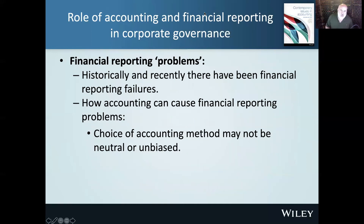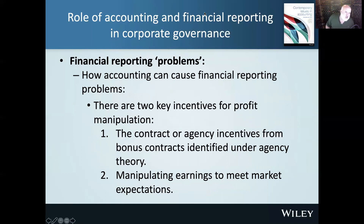Historically and recently there have been financial reporting failures. Choice of accounting methods may not be neutral or unbiased. There can be incentives for management to manipulate profit — they might want to ensure they reach a certain profit to receive a bonus. There are two key incentives for profit manipulation: the contract or agency incentive from bonus contracts, where management manipulates profit to earn a bonus; and manipulating earnings to meet market expectations, to look like a better manager — particularly useful when going for a next job.